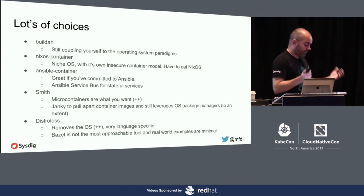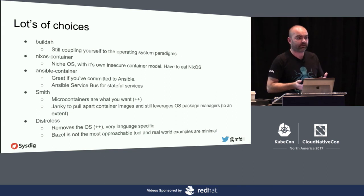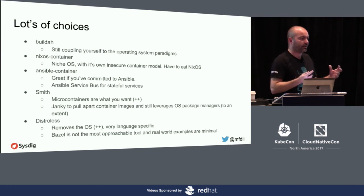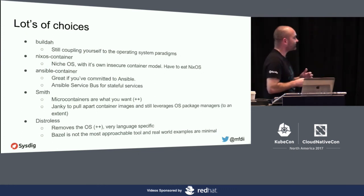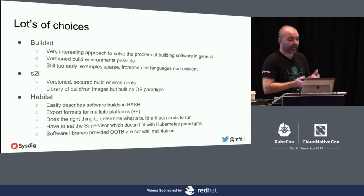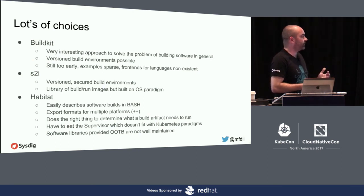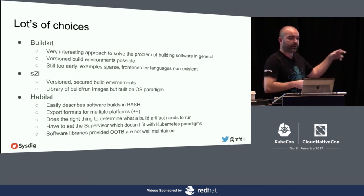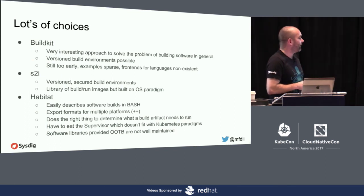Distroless is the right approach — it completely removes the operating system — but it's very language-specific right now, and Bazel is not the most approachable tool with minimal real-world examples. BuildKit is very interesting but very new and very early stage; the goal of solving software builds in general is right, but examples are sparse and frontends for languages are still mostly non-existent. I'm showing opportunity as open source contributors of where you can add value to get these projects where they need to be.